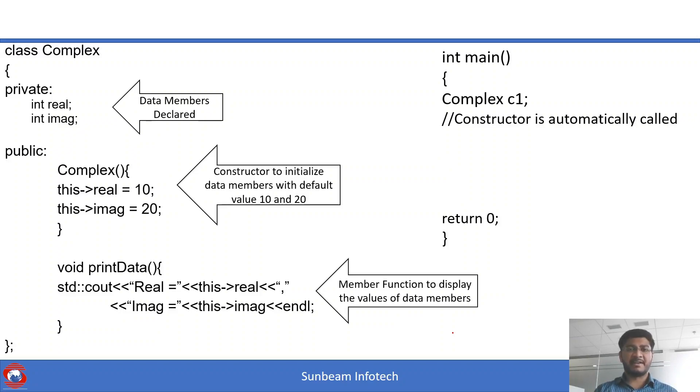And it is going to initialize my data members. To display the values of real and imaginary, I am going to call this function called as print data. Whenever I am going to call this function, it is going to display me whatever the constructor has initialized: the values 10 and 20.